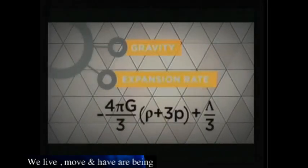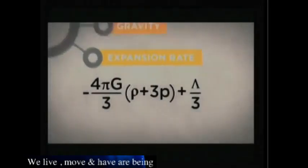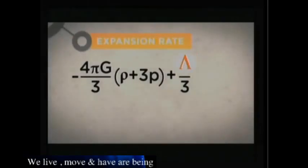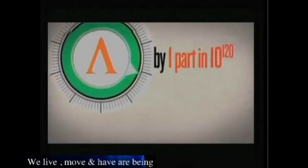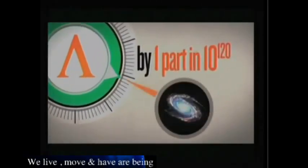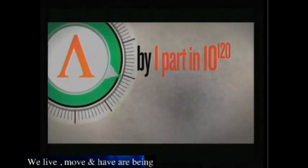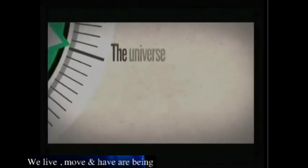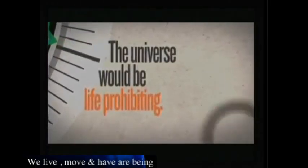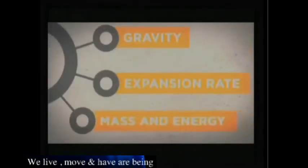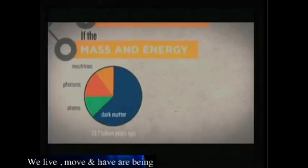Or consider the expansion rate of the universe. This is driven by the cosmological constant. A change in its value by a mere one part in 10 to the 120th parts would cause the universe to expand too rapidly or too slowly — and in either case the universe would again be life-prohibiting.